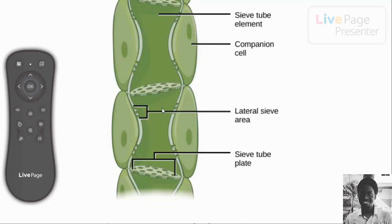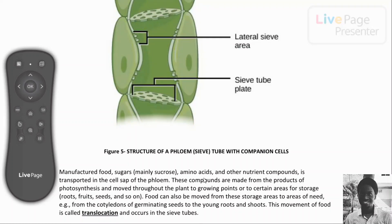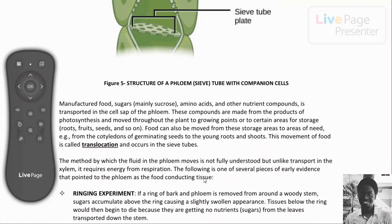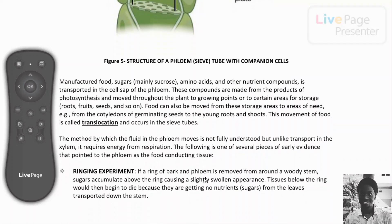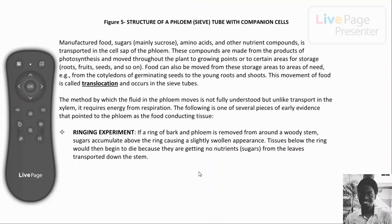Have you ever ringed a tree? Ringing a tree — also called girdling or ring-barking — involves removing or peeling a ring of bark and underlying phloem from around the stem of a plant. What this does is: if a ring of bark and phloem is removed from around a woody stem, sugar would accumulate above the ring, causing a slightly swollen appearance. Tissues beneath the ring would then begin to die because they are not receiving sufficient nutrients or sugars transported down from the leaves.